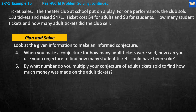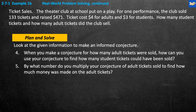Now you plan and solve. When you make a conjecture for how many adult tickets were sold, you can use it to find how many student tickets were sold. For example, if you think there were 50 adult tickets and there are 133 tickets total, then 133 minus 50 tells you how many student tickets there were. Similarly, you can find how much money came from adult tickets and by deduction, how much came from student tickets.